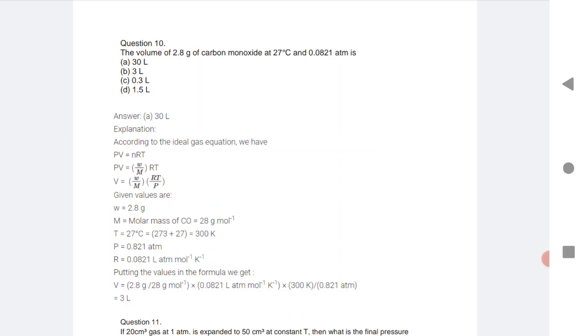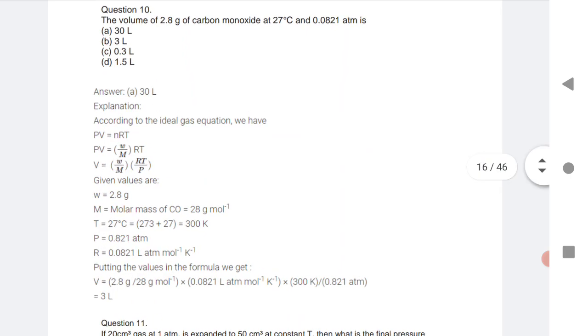It's 27 degrees and the R value is given as 0.0821 atm. So we know that according to ideal gas equation, PV = nRT. PV equals to, what is n? Number of moles. The formula of number of moles is weight by gram molecular weight. The weight of carbon monoxide is 2.8 grams and molecular mass of carbon monoxide: carbon is 12 and oxygen is 16. If you add both, you will get 28.